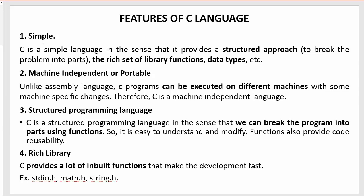The first feature is simple. C programming language is termed as one of the simplest programming languages because it provides a structured, systematic, or organized way of writing programs. You can write the program in the form of functions, subroutines, or modules, which helps you to understand, organize, and maintain the code in a better way. That is the meaning of structured approach — breaking the entire problem into smaller parts — which is why C is termed as a simple language.